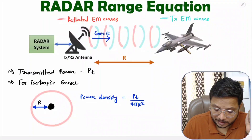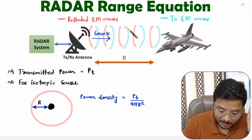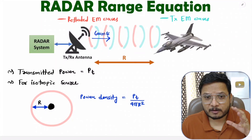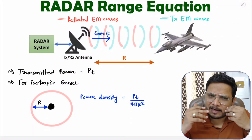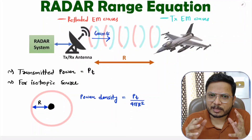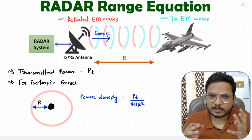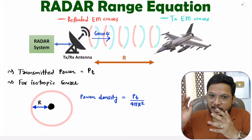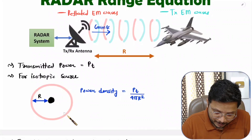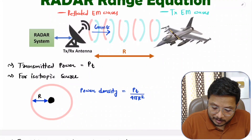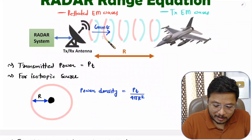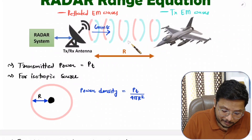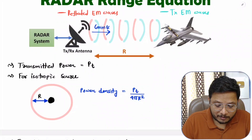After reflection, we have reflected EM waves. The object does not have a specific shape, so it can radiate randomly. This random radiation is considered as isotropic radiation — whatever power strikes the object is radiated equally in all directions. So as per the isotropic source explanation, the power received is radiated uniformly.